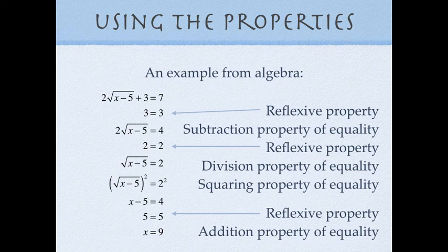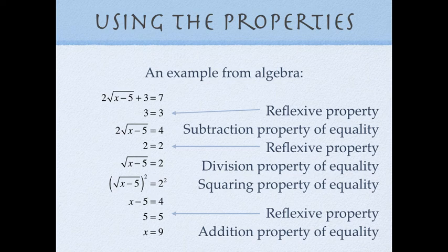Next I need to get rid of the square root, so I square both sides — that's the squaring property. All that remains on the left is x minus 5 and on the right is 4. The last thing to undo is the minus 5, so I put down 5 equals 5 and add it to both sides, ending up with x equals 9. In algebra we didn't write down the reasons — the reflexive property, the subtraction property, and so on — but now in geometry we're going to get more precise about naming those things.